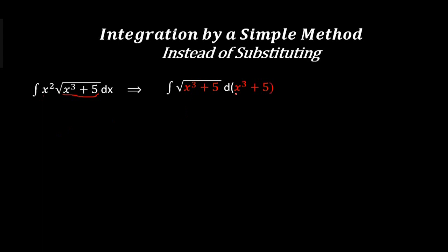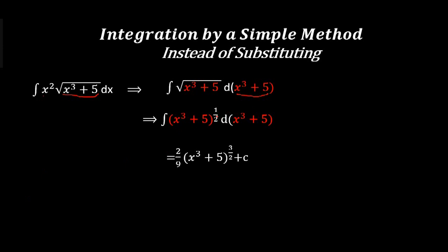We are now integrating with respect to (x³ + 5). Take note — we're used to integrating with respect to x, but now we're integrating with respect to a term. Since x³ + 5 to the power half is the integrand, we add 1 to the power to get 3/2, divide by 3/2, and with the one-third factor, we get (2/9)(x³ + 5)^(3/2) + C.